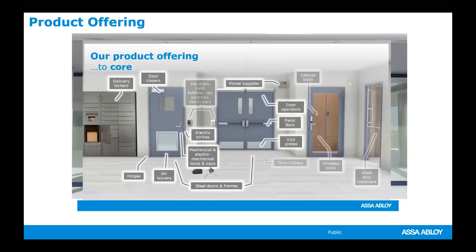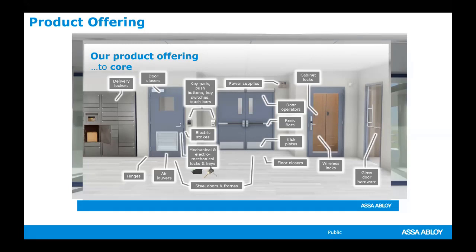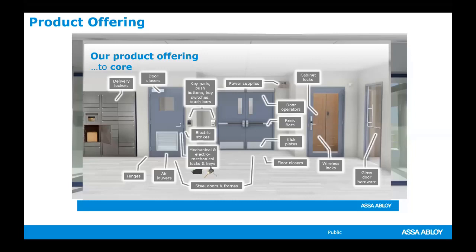I always show this screen because it represents everything that ASSA ABLOY manufactures — the world's largest manufacturer of locks, doors, and access control. This shows what encompasses the security of an opening: electric strikes, door closers, hollow metal frames, hollow metal doors, exit devices, mortise locks, keypads, power supplies, flat goods, patent control cylinders and keys.